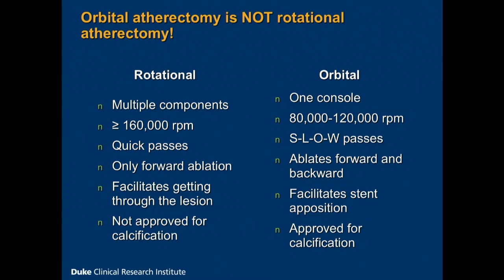We're really trying to treat the patient. Orbital atherectomy is a little bit different. It uses one console and uses a motor — it doesn't use a helium tank. The RPMs are much, much lower: 80,000 to 120,000. You tend to use this device very, very slowly, and as part of the FDA training for this device, you do have to spend time on a simulator, which will beep if you're going too fast. It's amazing how slowly you have to go — if you go very quickly, you're really just doddering the lesion and not getting any ablation whatsoever.